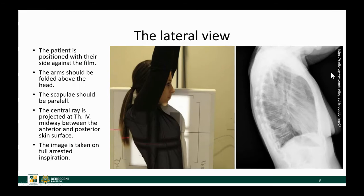The lateral view is, as I mentioned, very important. When we obtain a lateral view, the patient is positioned with their side against the film — usually the left side touches the detector, but in certain situations we ask the patient to turn 180 degrees so their right side touches the detector. The arms should be above the head so the scapulae are not projecting over the image.